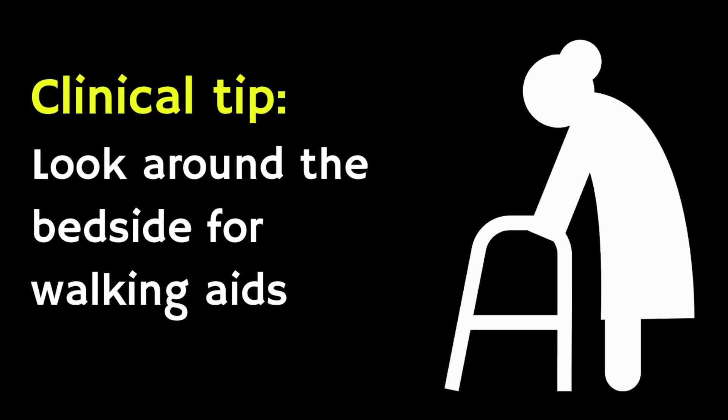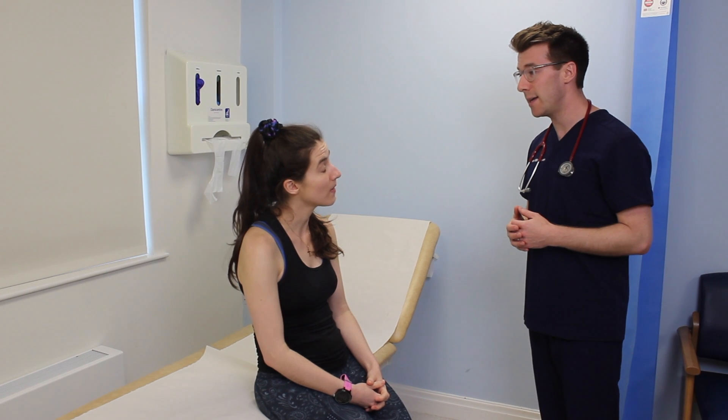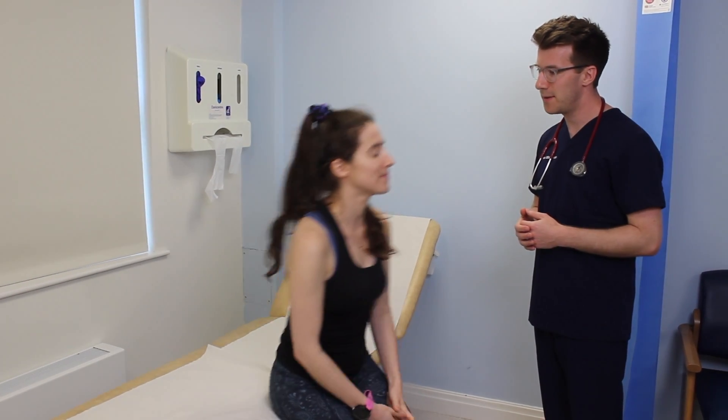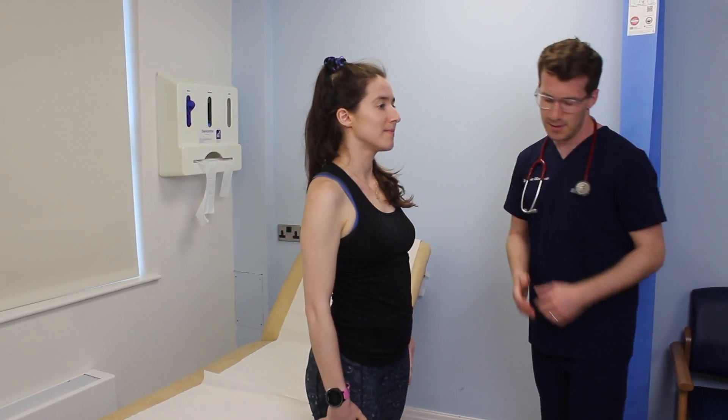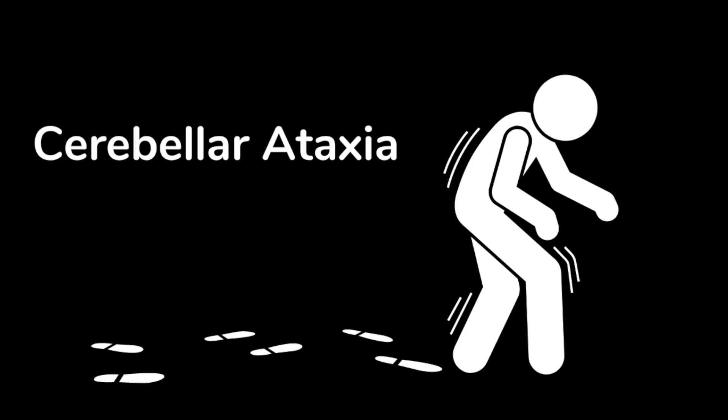This might include looking for walking aids, since cerebellar disease can cause issues with balance. Start off the examination by assessing the patient's gait. Ask them to walk across the room, turn around and come back. Patients with cerebellar pathology may have unsteady and broad-based gait, commonly referred to as cerebellar ataxia.